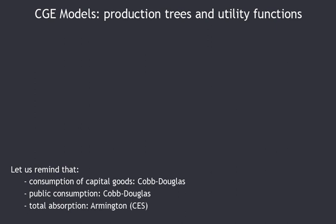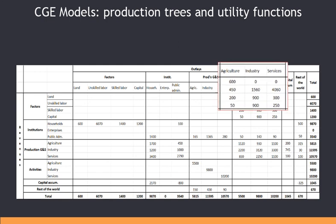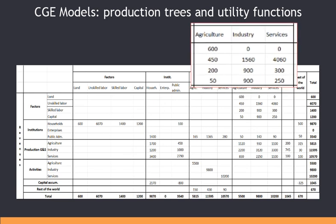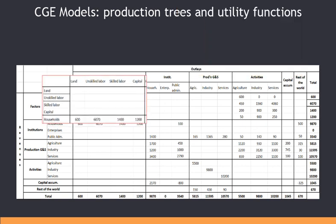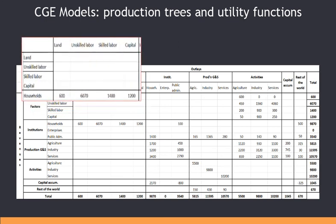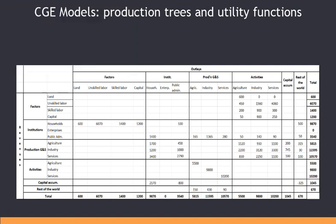In this model, consumption of capital goods follows a Cobb-Douglas, public consumption follows a Cobb-Douglas, and total absorption — the sum of household consumption, intermediate consumption, public consumption, and capital goods consumption — follows an Armington, that is, a CES. The Social Accounting Matrix adapted to this new model has four factors of production instead of two: the agricultural sector demands all four factors, while industrial and services sectors demand only three, as they do not use land. Household income comes from possession of these four factors.